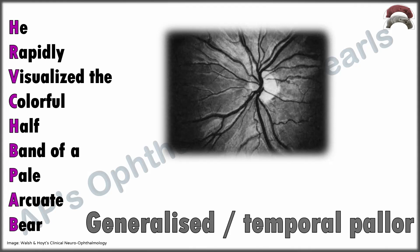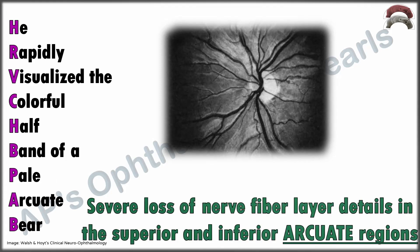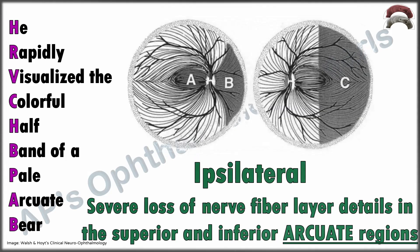'Pale' stands for generalized or temporal pallor in the optic disc ipsilateral to the lesion, though occasionally a vertical bow-tie atrophy may occur. 'Arcuate' stands for a severe loss of nerve fiber layer details in the superior and inferior arcuate regions of the ipsilateral disc. This is because of the temporal retinal ipsilateral uncrossed fibers entering the optic disc at the poles.